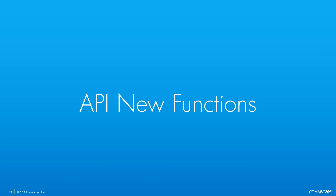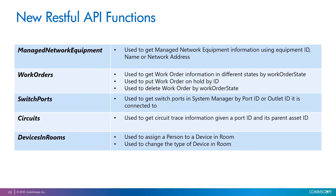Next, let's briefly review some of the new API functions included in this release. We added an API to obtain managed network equipment information given its ID or the IP address of the switch. Another API lets you get work order information by work order state, put a work order on hold, or delete work orders in the system by their state. The switch ports function lets you collect switch port properties given the port ID or the outlet ID where the port is connected. The circuits API function lets you get circuit trace information given a port ID. Finally, the devices in-room function lets you assign a device in-room to a person or change the device type for a device in-room.